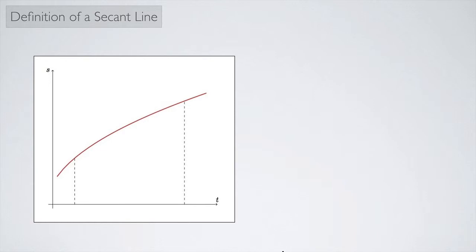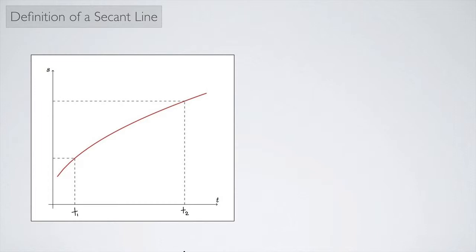And so I could label the first time t1 and the second time t2. And if I have two times I have two corresponding positions. The position of the particle at time t1 would be s1 and the position at time t2 would be s2.